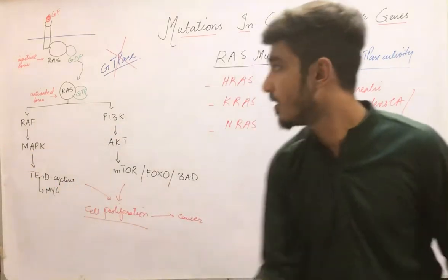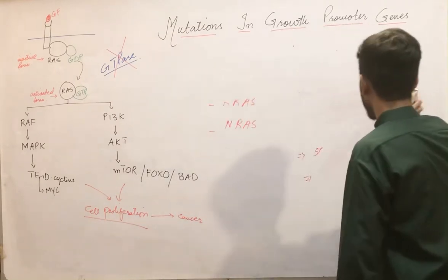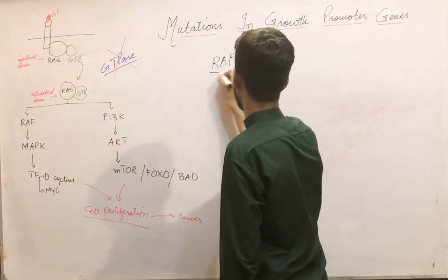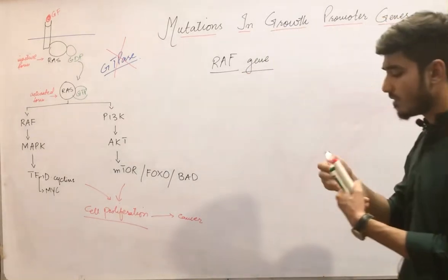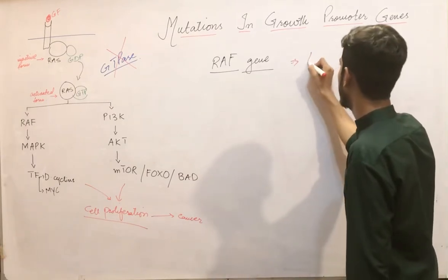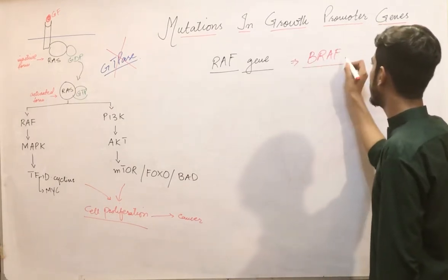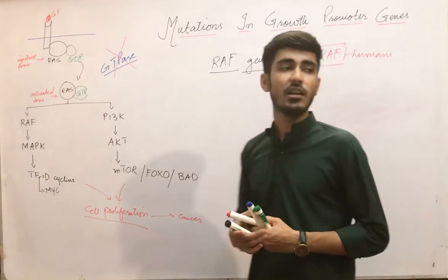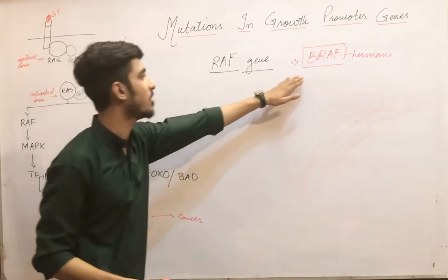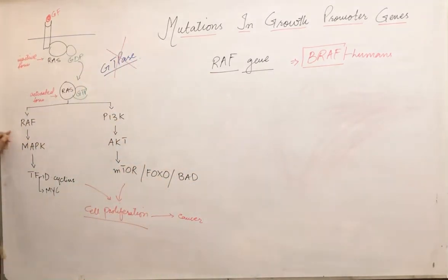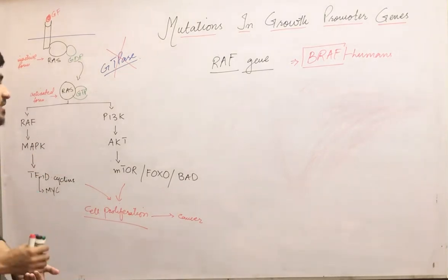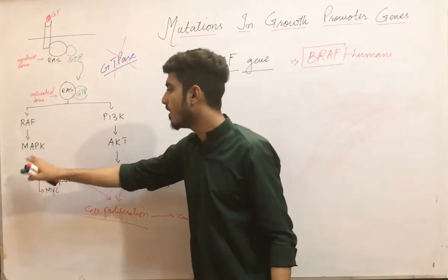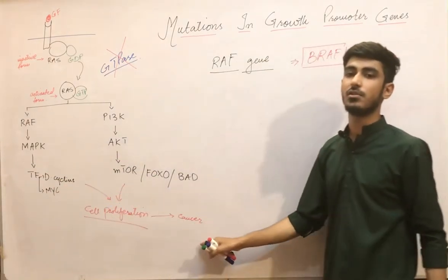Now moving on to the second gene in the growth pathway: the RAF gene. In humans, the RAF gene present is BRAF, so we study the mutation in BRAF. This BRAF is a member of the RAF gene family. Normally, RAF activates MAPK, which activates transcription and carries out the cell cycle. A gain-of-function mutation in BRAF causes over-activation of MAPK, over-activation of transcription factors, and over-proliferation, finally leading to cancer.